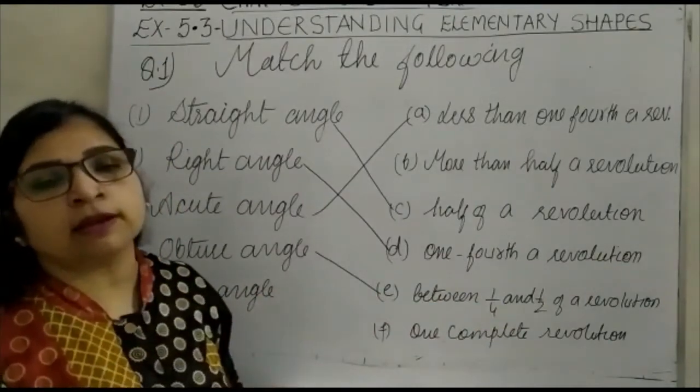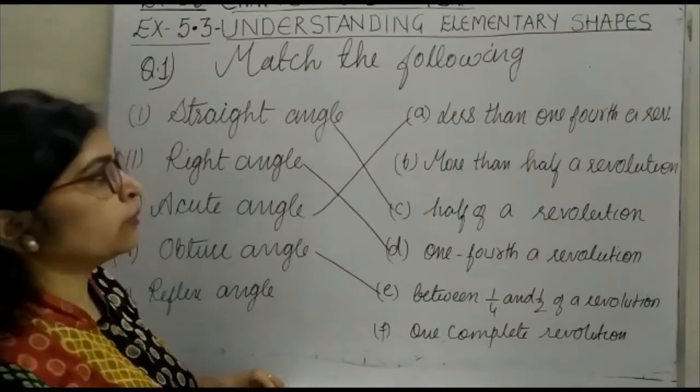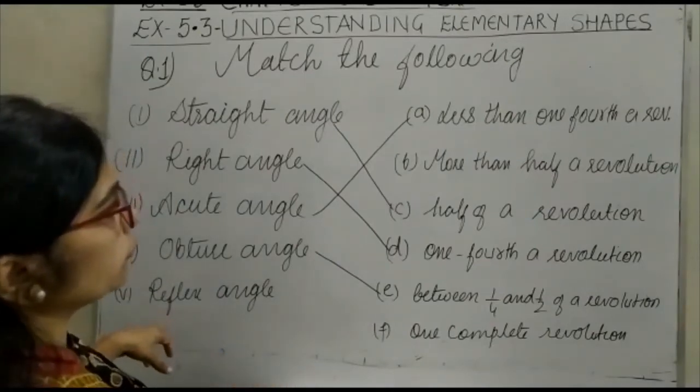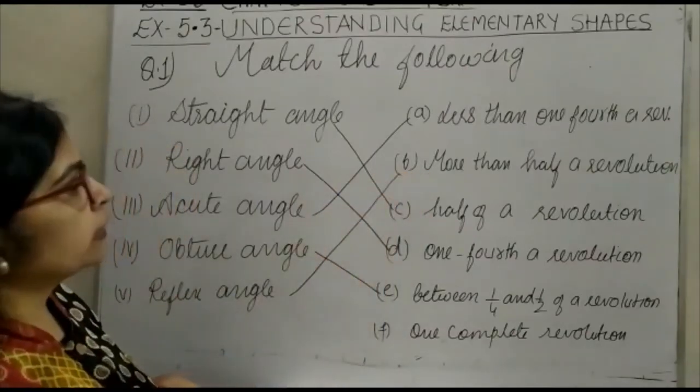Next is reflex angle. Reflex angle is greater than 180 but less than 360. In that case, for the fifth option, it will be option B, that is more than half of a revolution.